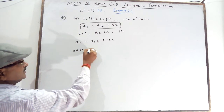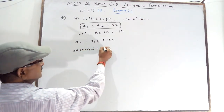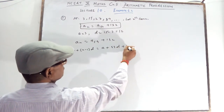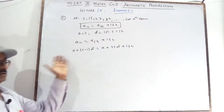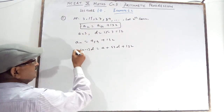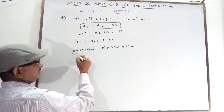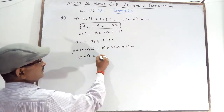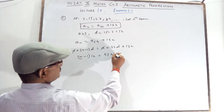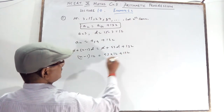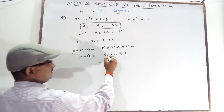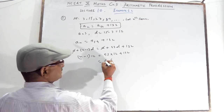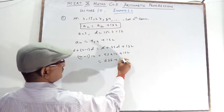A plus (N minus 1) into D is equal to A plus 53D plus 132. A and A cancel out. So (N minus 1) into D equals 53 into 12 plus 132. That gives 12(N−1) equals 636 plus 132, which equals 768.